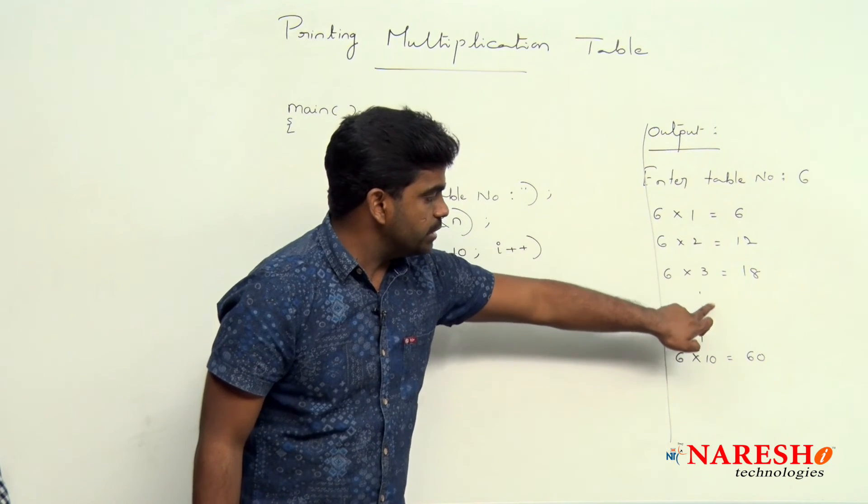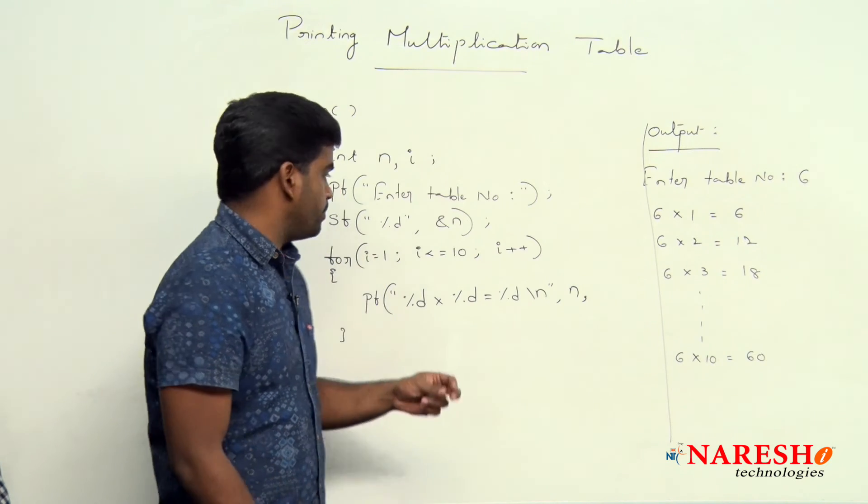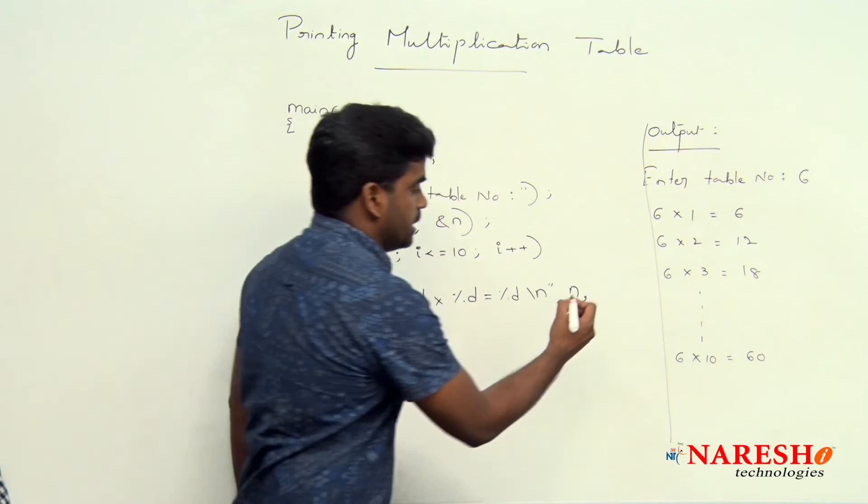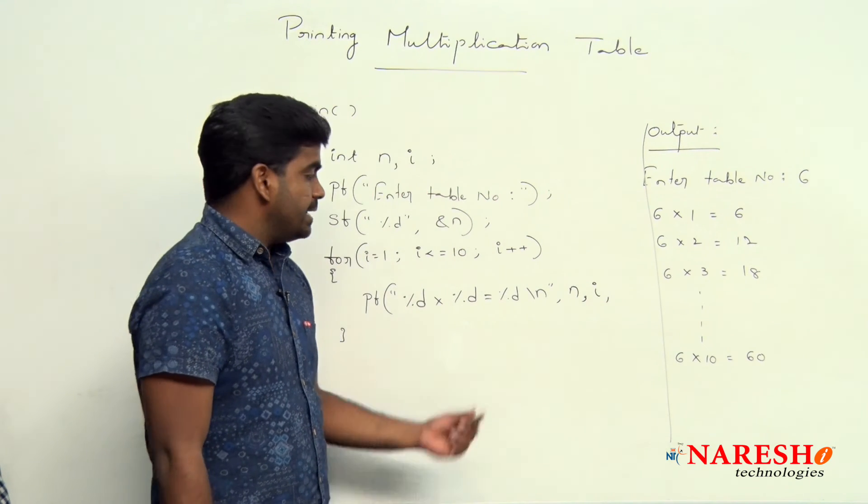In the second place, we need to display 1, 2, 3, 4 up to 10. The value what is varying, what is changing, that is i. So in the second place, here we are writing i value.